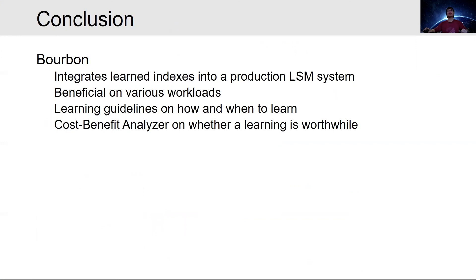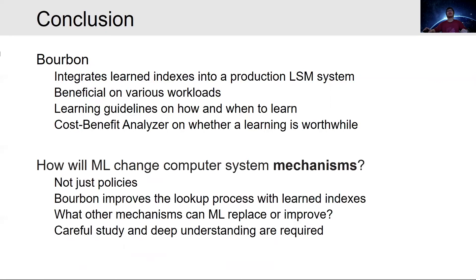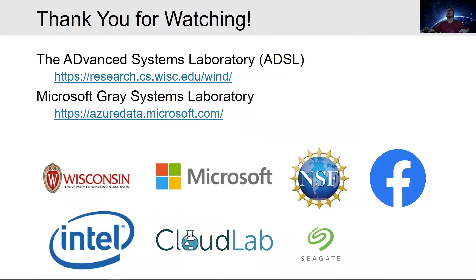In conclusion, Bourbon integrates learned indexes into a production LSM system and shows benefits on various workloads. It presents learning guidelines on how and when to learn, and applies a cost-benefit analyzer to decide whether learning is worthwhile during runtime. In the era of machine learning, we are thinking about a broader question: how will machine learning change computer system mechanisms? Careful study and deep understanding of the underlying systems are required to fully utilize the power of machine learning. Please refer to our paper for more detailed learning guidelines, implementations, and evaluations. Thank you for watching.